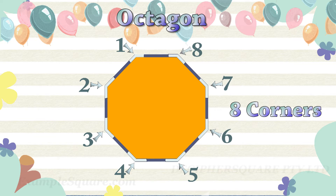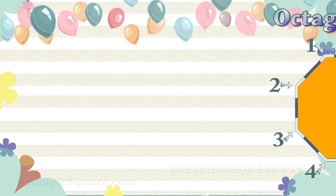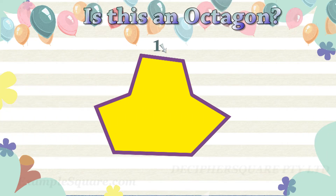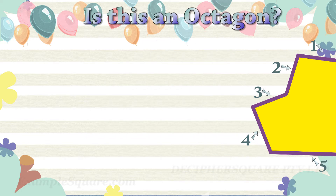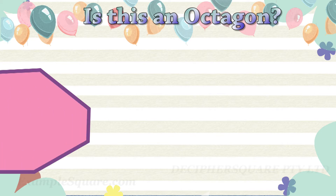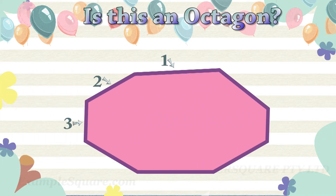Is this an octagon shape? Yes, this is an octagon shape. It has eight straight sides and eight corners.